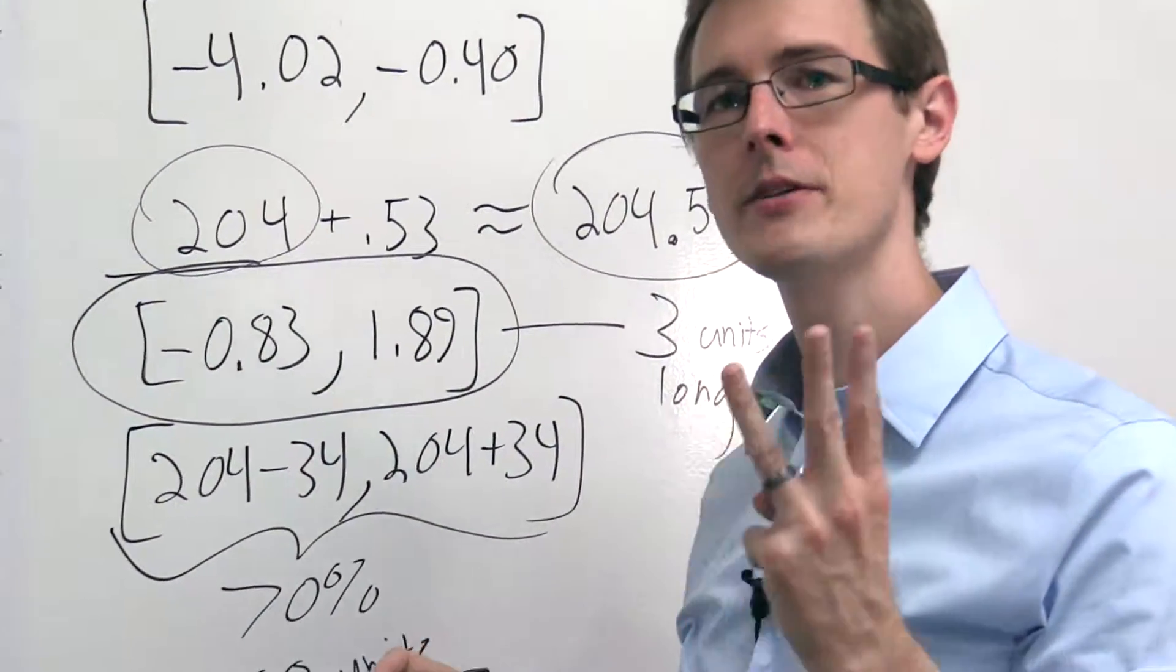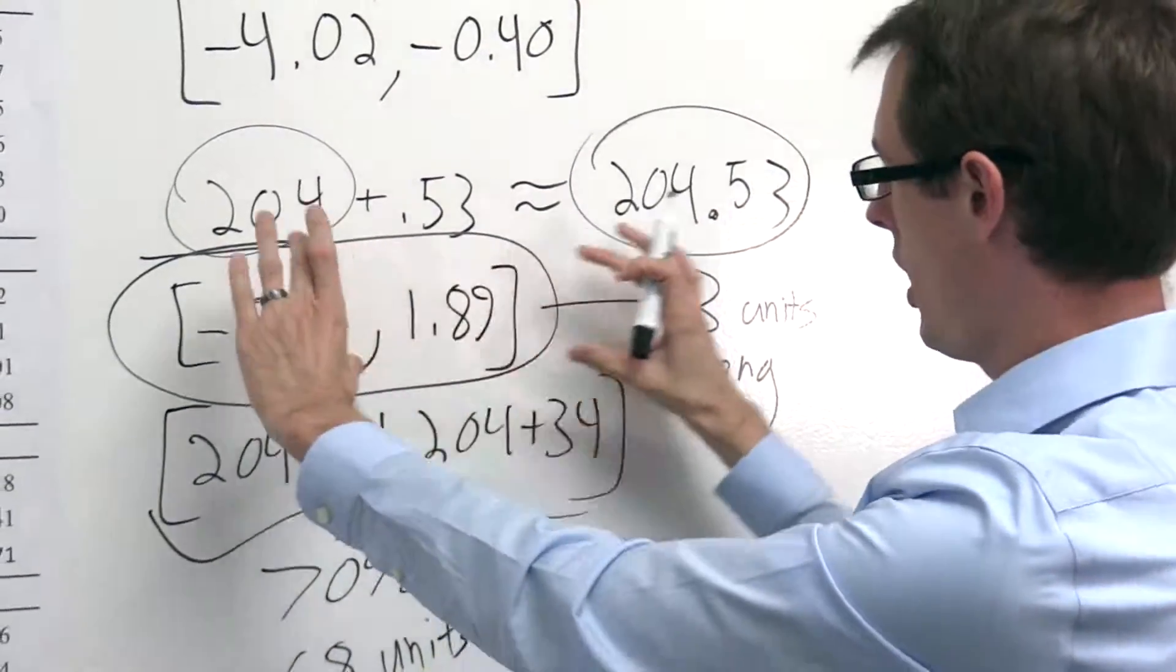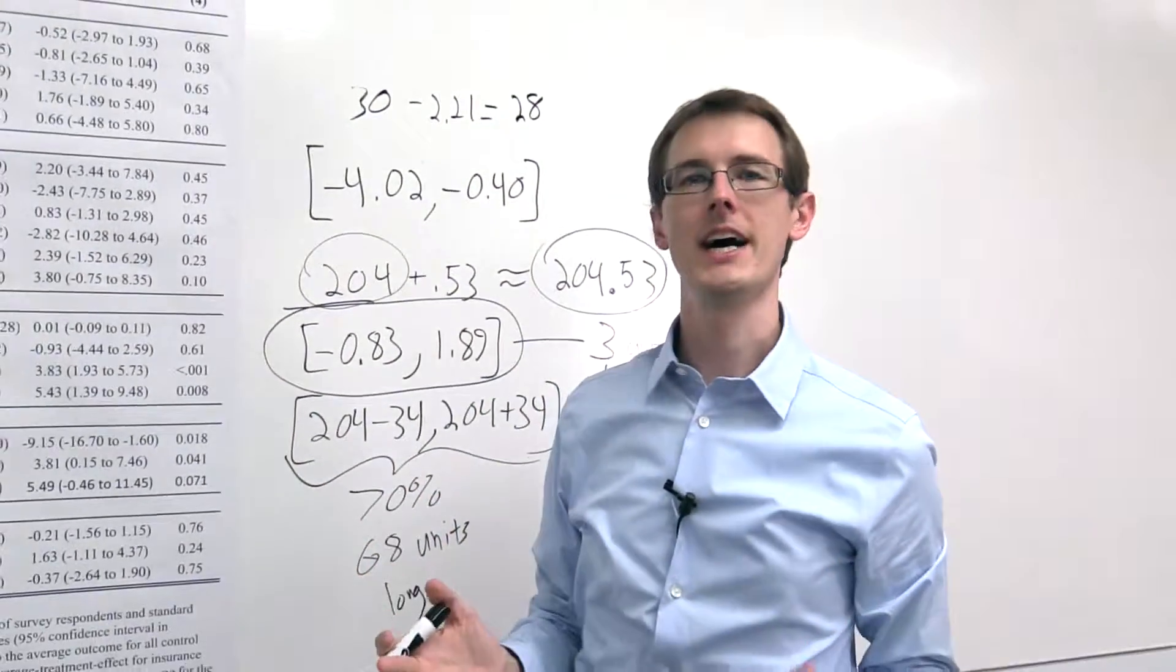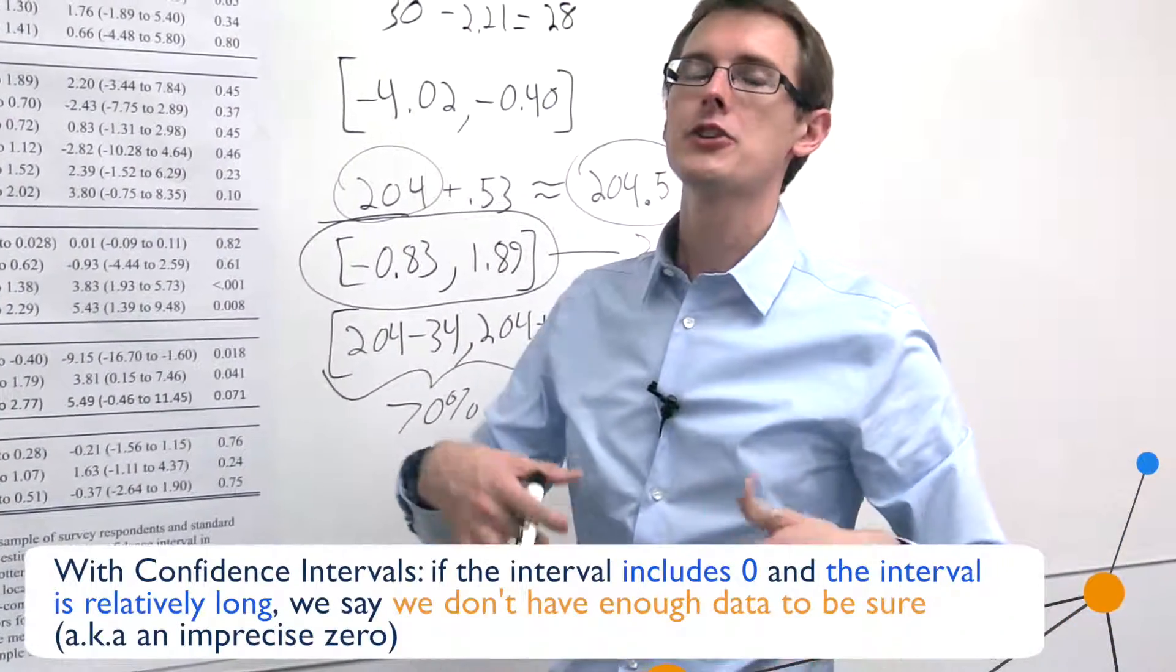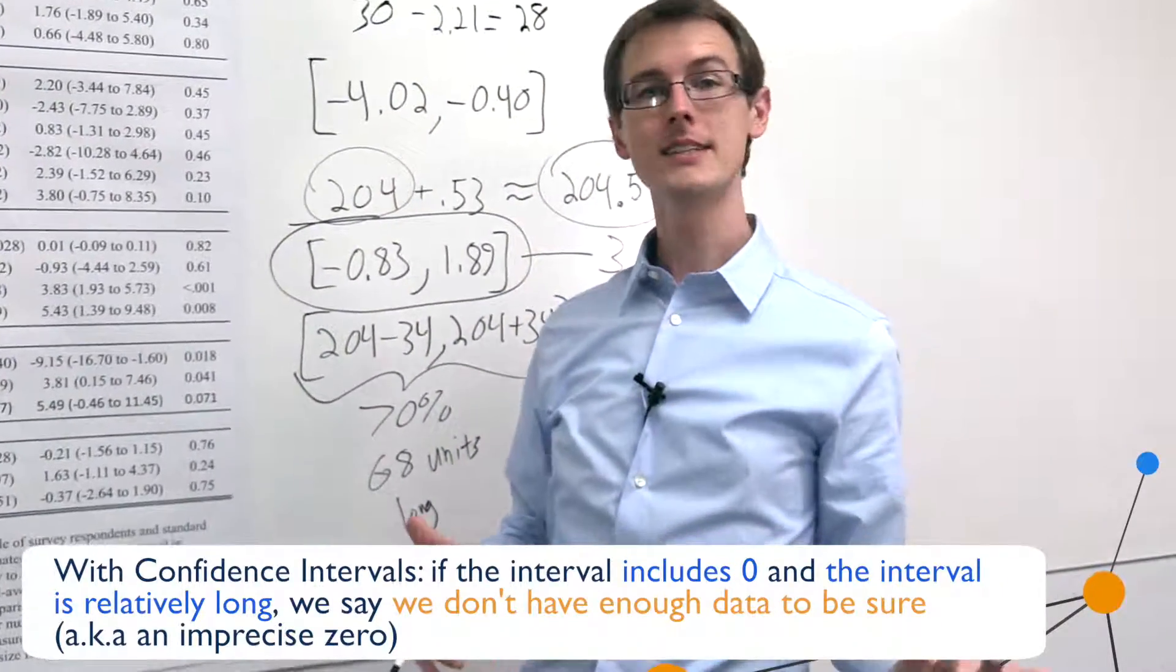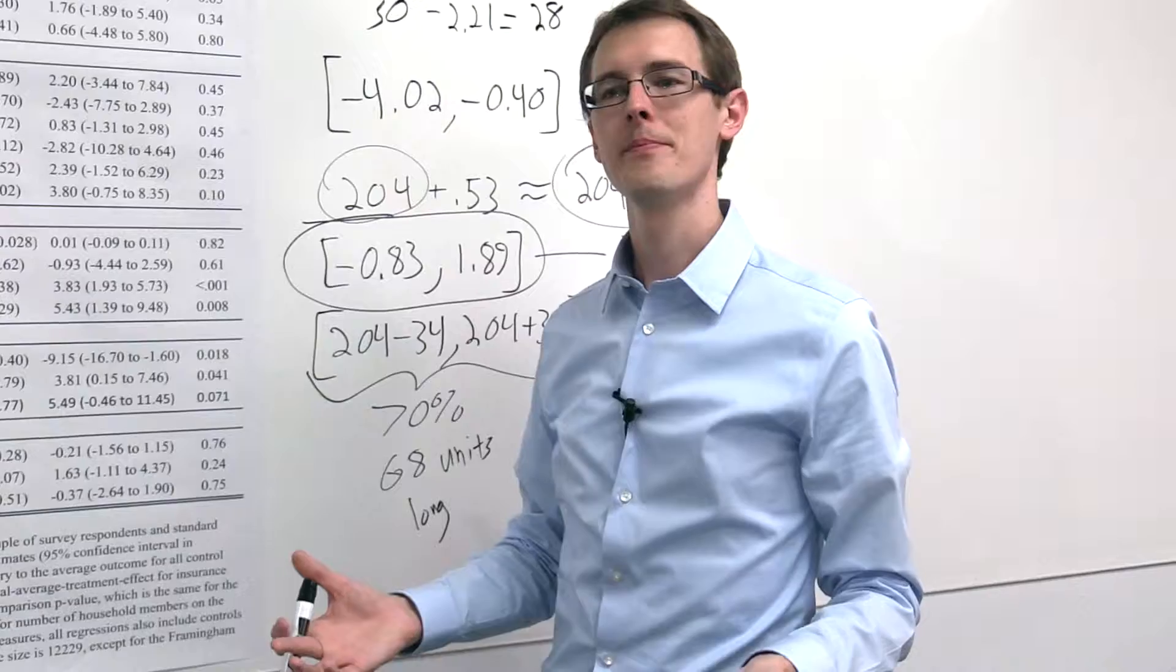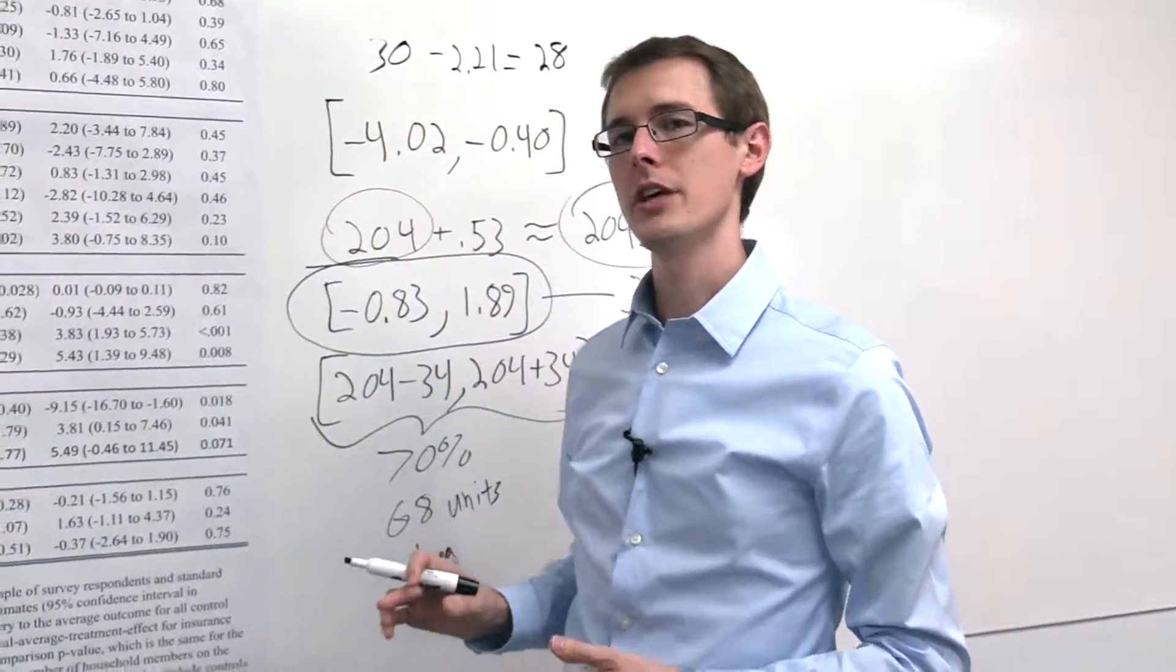Now there's a third possibility that isn't illustrated here, and that's when you have a large confidence interval that contains zero. There the conclusion is we don't have enough data and we can't say anything, unfortunately. It means that the true treatment effect could be zero, or it could be something large and positive, could be something large and negative. We just don't know. We don't have enough data to determine.